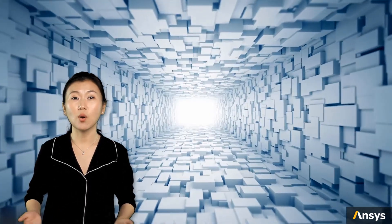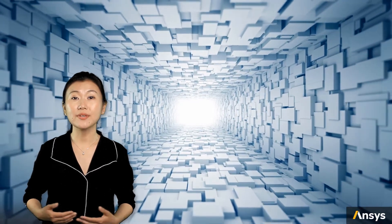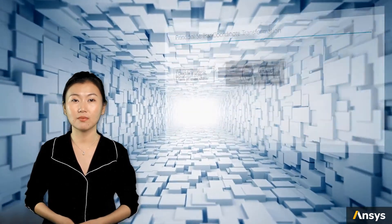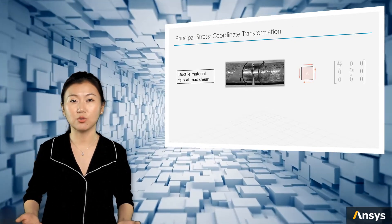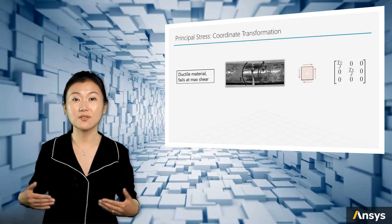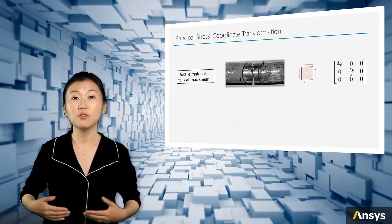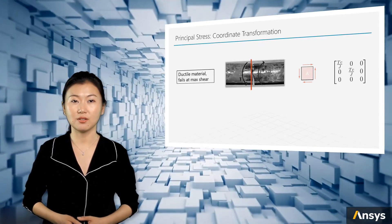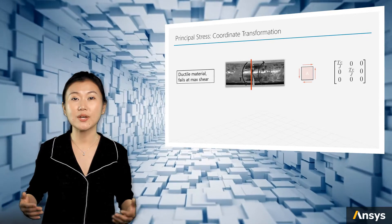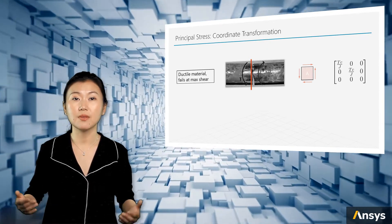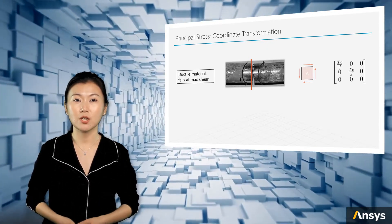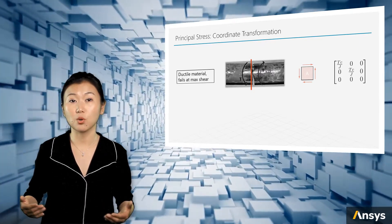Now, you might wonder why such coordinate transformation is needed. Why not just stick with one coordinate system? Well, we want the stress result to serve engineering purposes instead of just being numbers without any physical meaning. Let's go back to the torsion bar problem. In real life, if the torsion bar is made of a ductile material, for example steel, with excessive torsion load, the material will break and the failure plane will be almost perpendicular to the axis direction. This is because ductile materials fail when shear stress reaches a certain value. In this case, engineers naturally want to use a coordinate system that reflects the maximum shear stress, so we prefer to review the stress with the infinitesimal cube in position A.